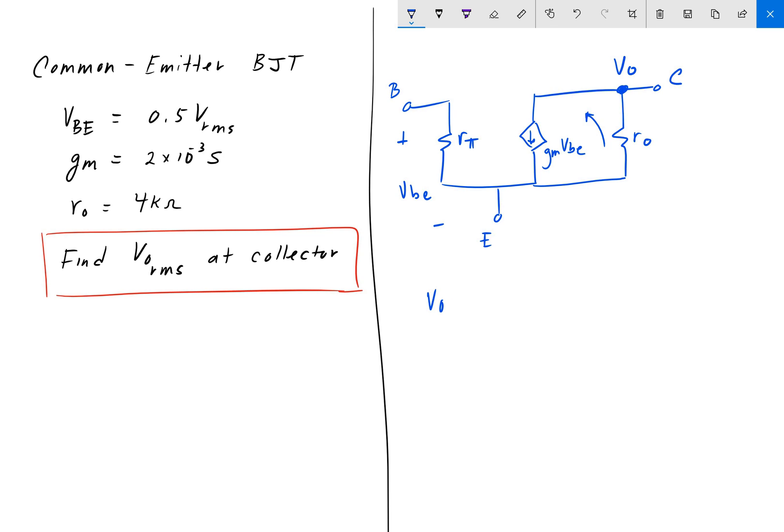So Vout here is simply GmVBE, which is that dependent current source right there, multiplied by RO.